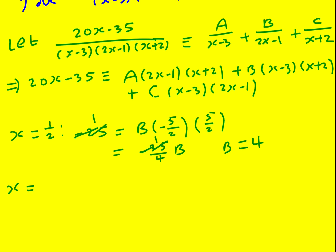Next up, let's go with x is minus 2. So I'm going to get minus 40 minus 35, minus 75 equals, I'm just left with the c term, so c times minus 5 times minus 5. That's going to give 25. So c is minus 75 over 25, c is minus 3.